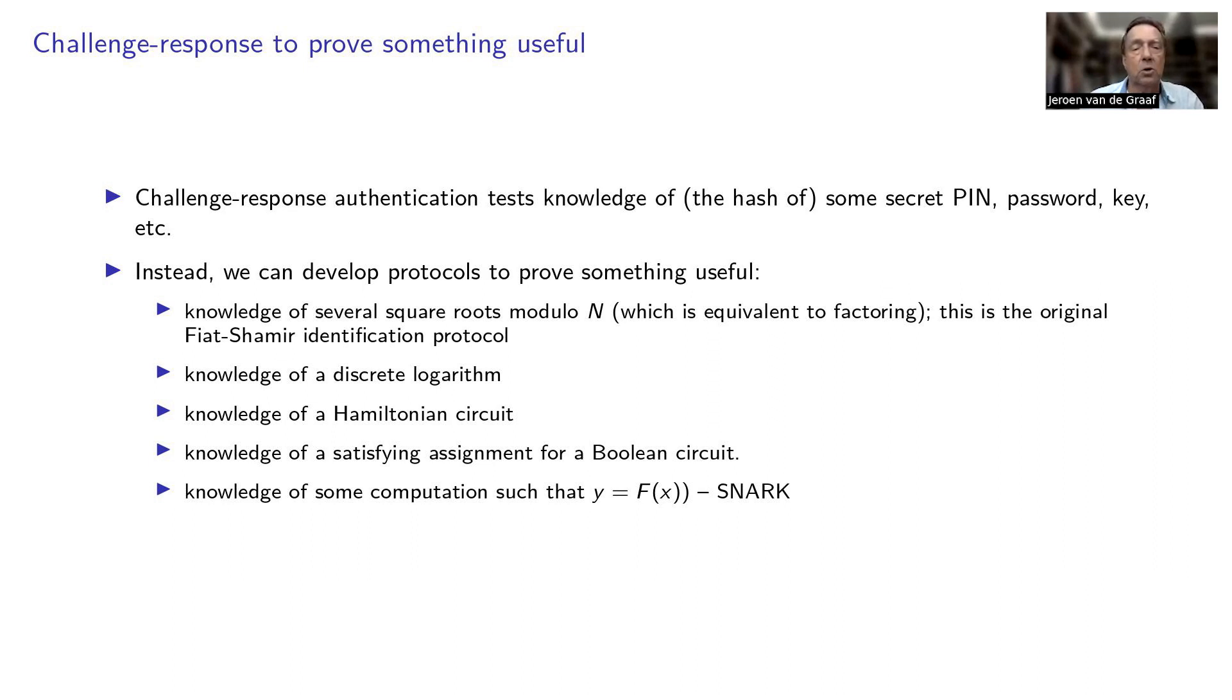historically it's interesting to note that Fiat and Shamir developed this protocol, an authentication protocol, in which the user shows knowledge of several square roots modulo N, and this problem is equivalent to factoring. So this was like a provable authentication protocol. This is the original Fiat-Shamir identification protocol, and this is exactly the context in which the Fiat-Shamir heuristic, the Fiat-Shamir transform, appeared for the first time.